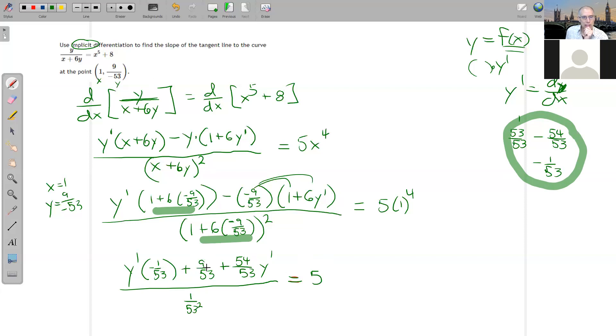Consolidating things, we have Y prime. So negative 1 over 53 plus 54 over 53 is 53 over 53. So then I just get Y prime in the top, plus 9 over 53.